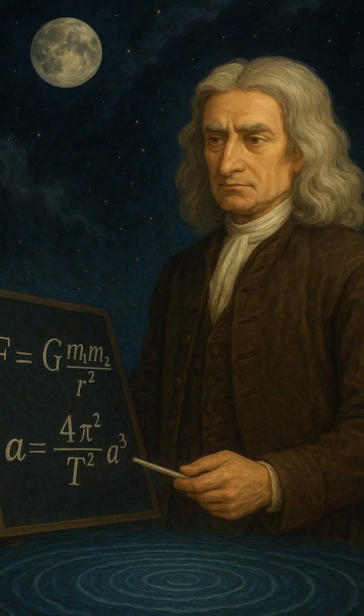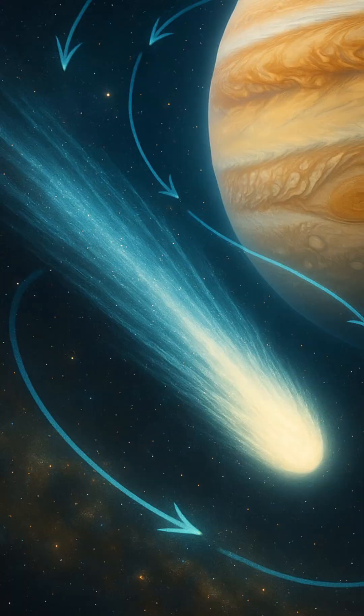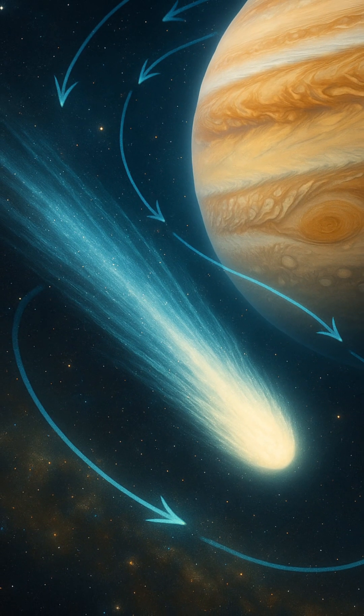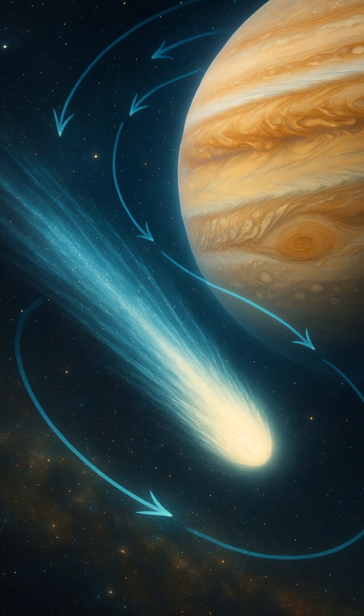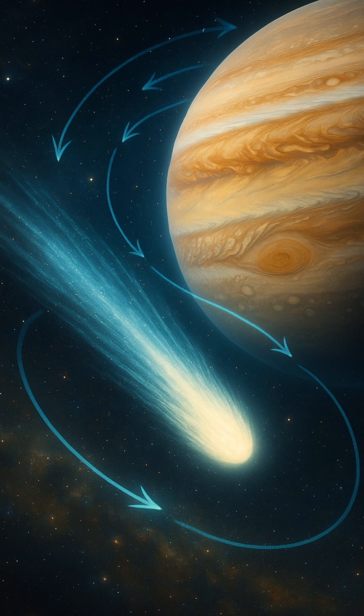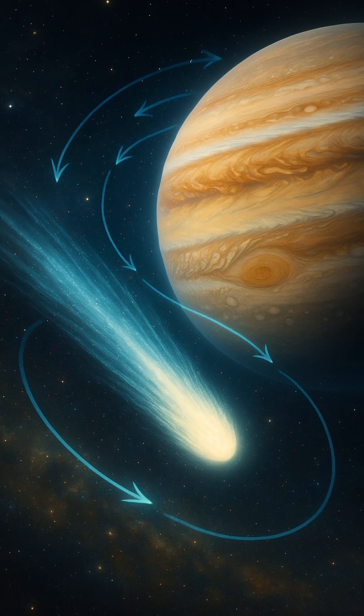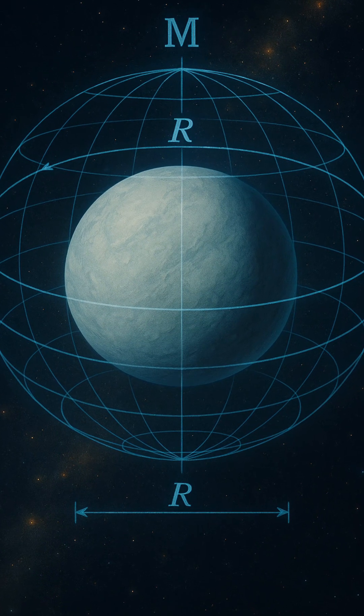It's not just the moons either. Even the orbit of a spacecraft or the way a passing comet's path bends can reveal the gravitational fingerprint of a planet. This method is so precise, we can even weigh planets hundreds of millions of kilometers away, without ever going there.